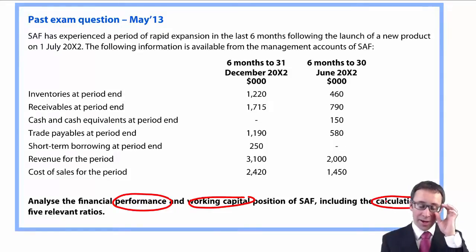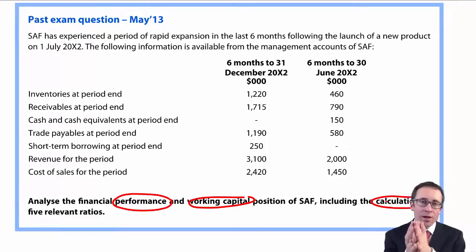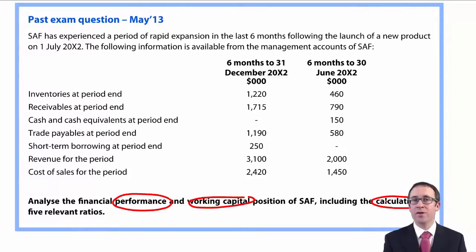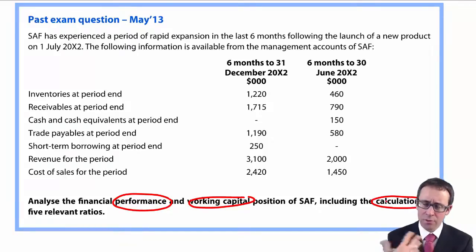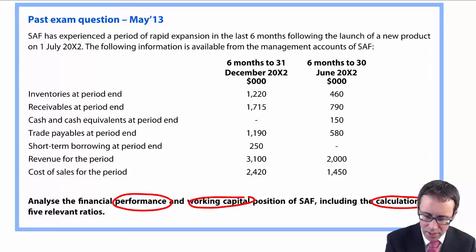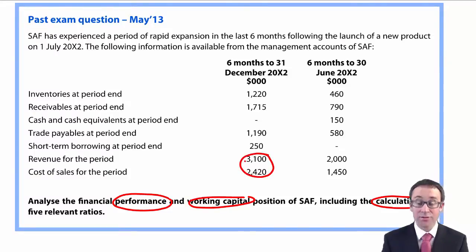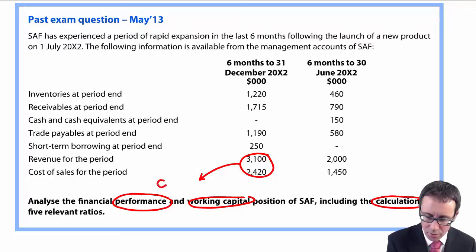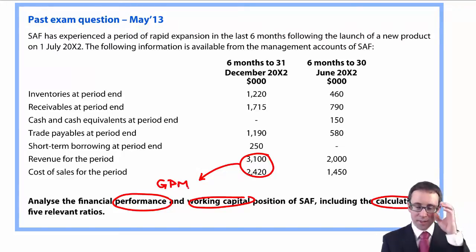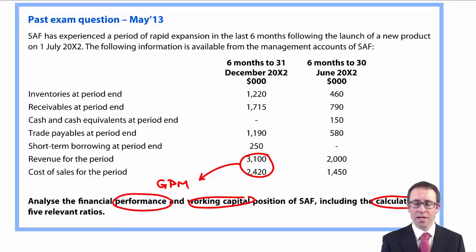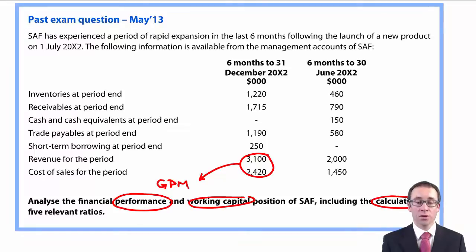What people did is they looked at the performance and automatically thought they needed some performance ratios. You weren't told what to calculate. The only thing you can calculate to do with performance is, if given revenue and cost of sales, you can work out the gross profit — work out the gross profit margin. Take revenue less cost of sales, divide that by the revenue, and you should get your gross profit margin.